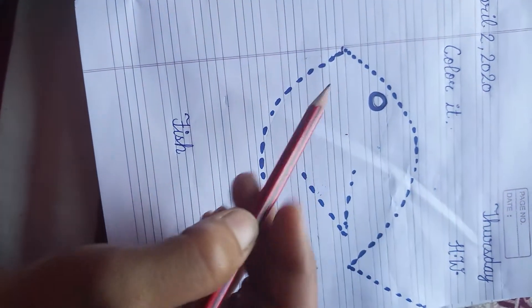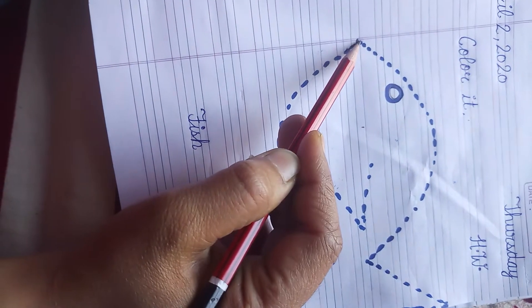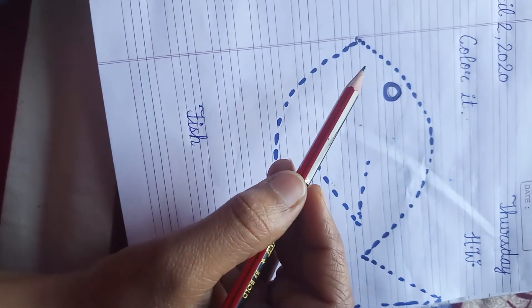Firstly, we will make the fish in the proper way. We will match each dot to make a fish. Okay, let's start.